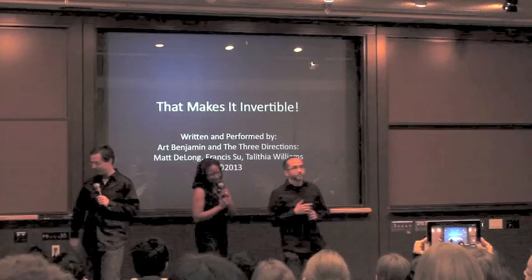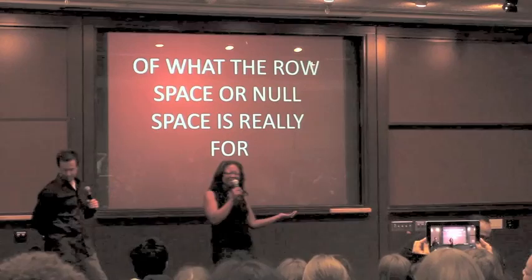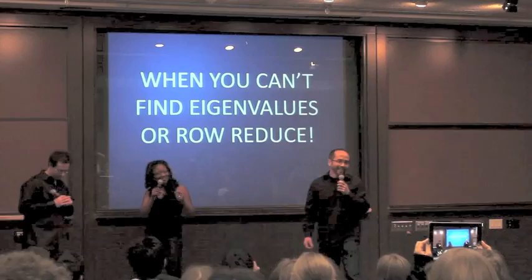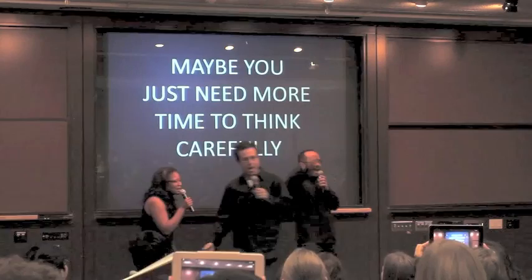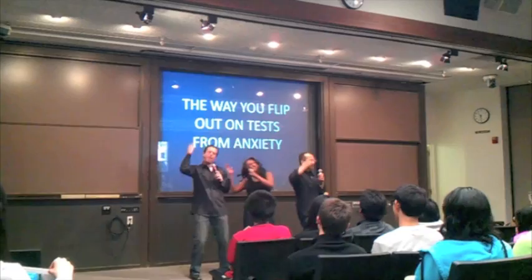You're insecure. You're not that sure of what the row space or null space is really for. There's no excuse. So what's the use when you can't find an eigenvalue to row reduce? Everyone else in the room can do it. Everyone else can do it. Maybe you just need more time to think and believe — the way you flip out on your desk from anxiety.